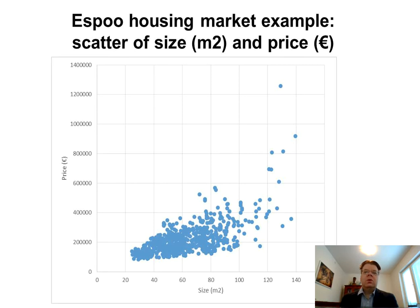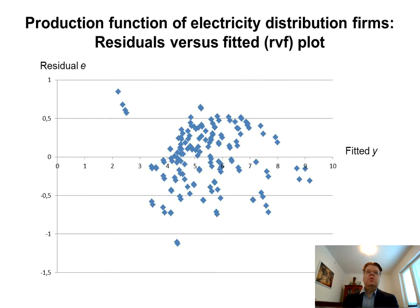If you have a multiple regression model, and you don't have that many variables, you can make multiple such plots. But in the multiple regression case, it can be useful to use the so-called RVF, or residuals versus fitted plot, where on the horizontal axis you have the fitted values of Y — the predicted values, y-hat. That would be alpha plus beta times x, or a plus b times x in the single regression case. On the vertical axis, you plot the regression residual.